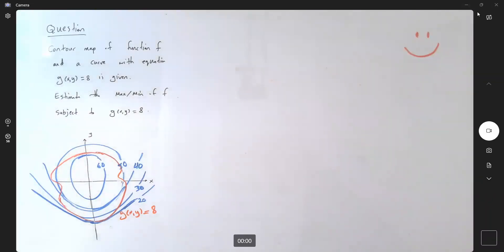The question says, well, here we have a contour map of function f, which are given in blue to us.